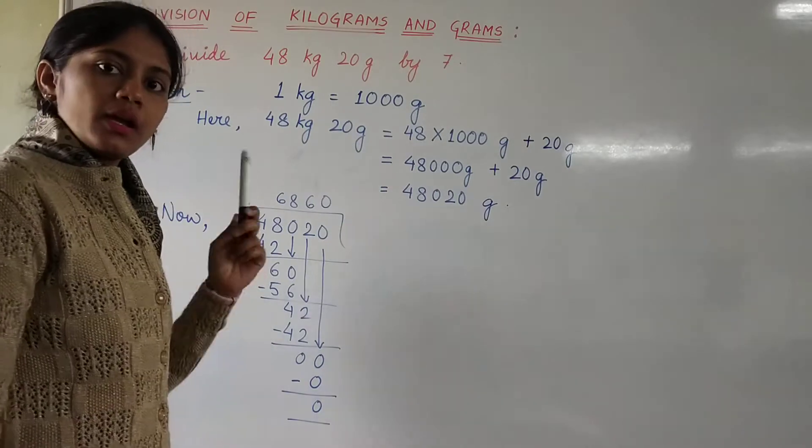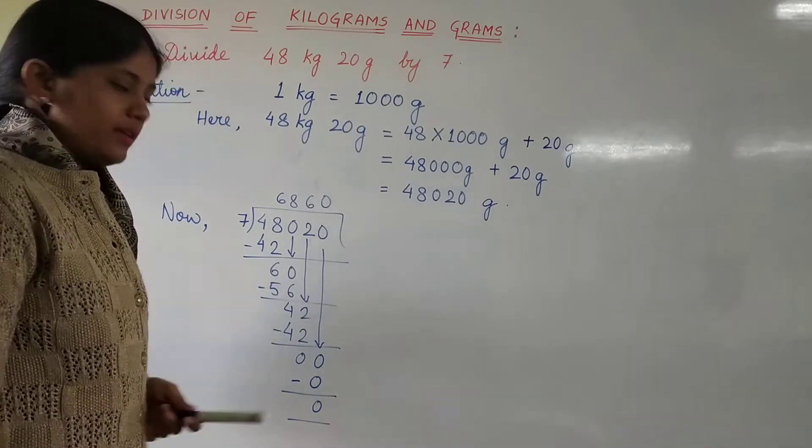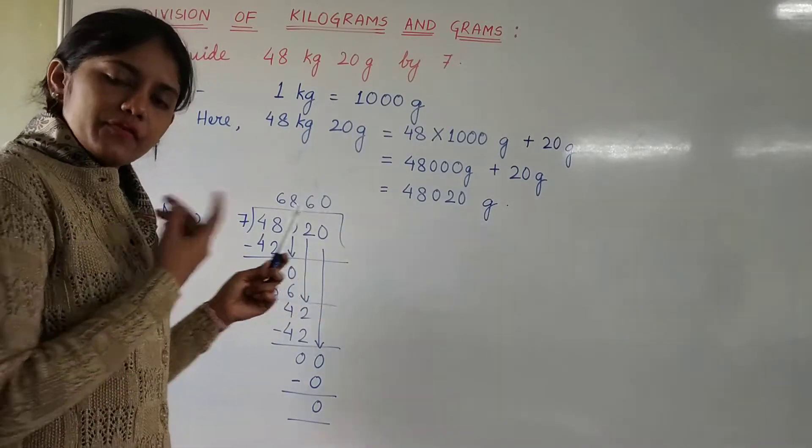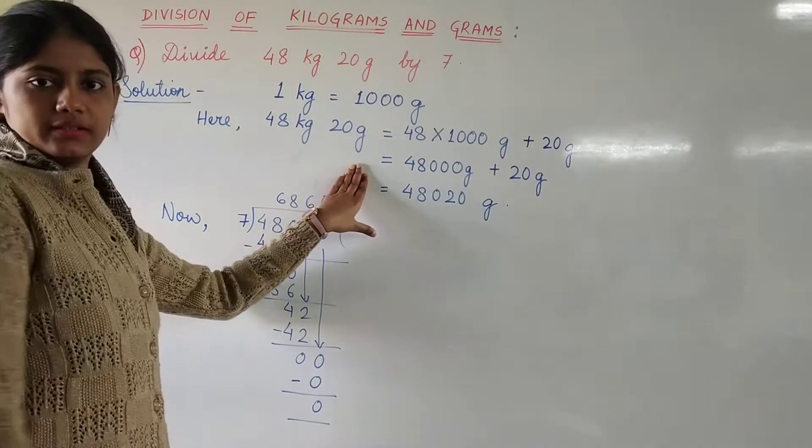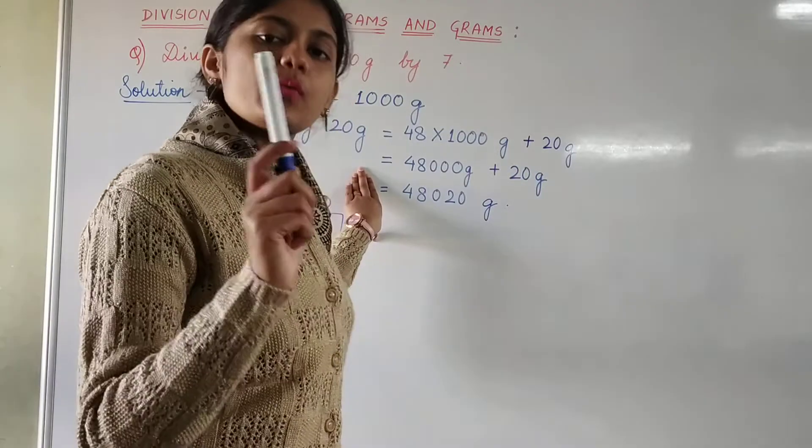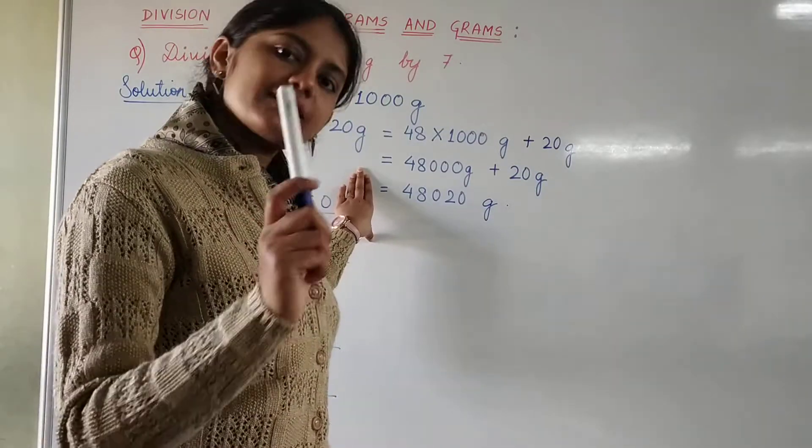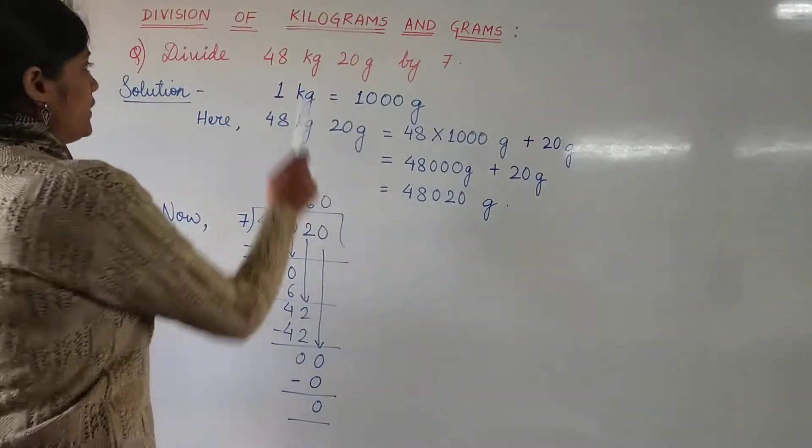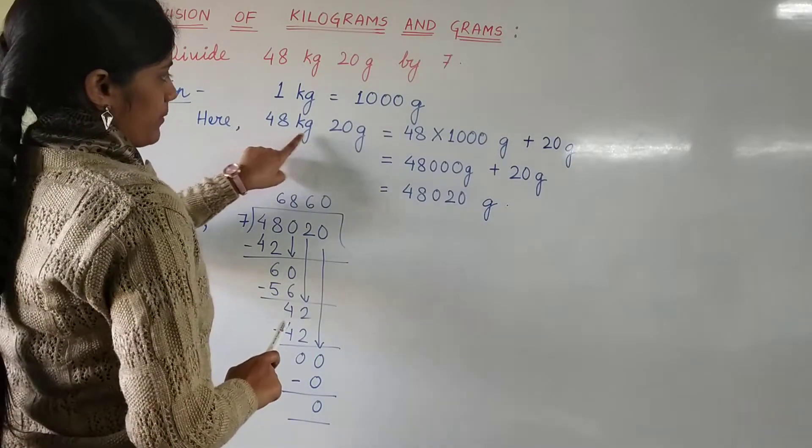First, we will convert the dividend into one unit, that is, the smaller unit. The dividend is 48 kilograms 20 grams.